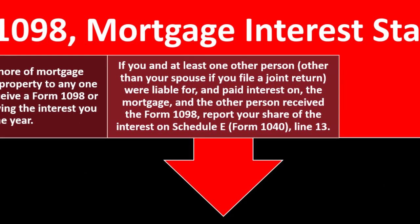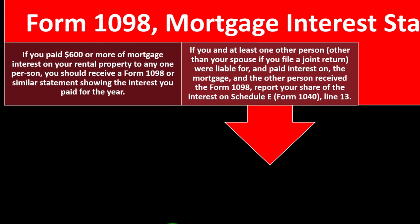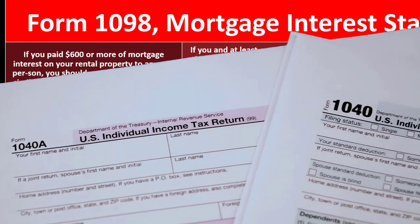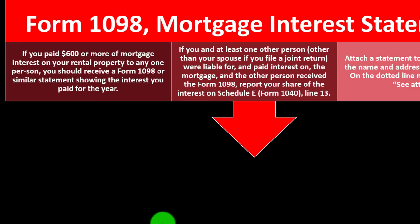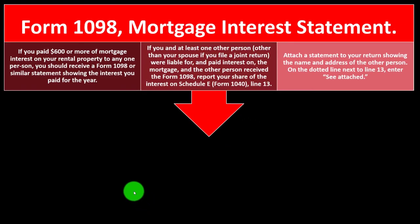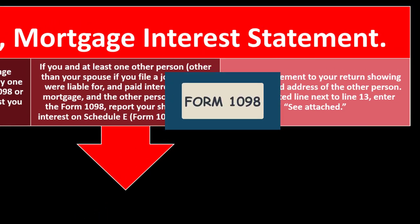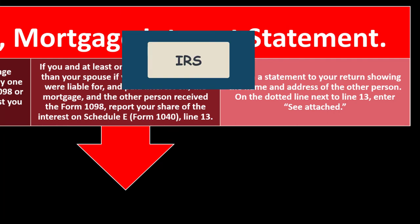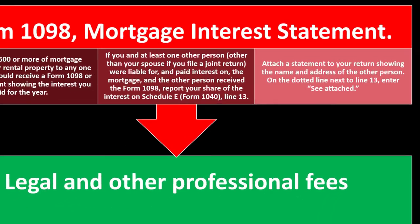If at least one other person, other than your spouse if you file a joint return, was liable for and paid interest on the mortgage, and that other person received the Form 1098, report your share of the interest on Schedule E, Form 1040. Attach a statement to your return showing the name and address of the other person, since the 1098 also goes to the IRS and could cause scrutiny.